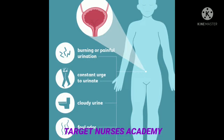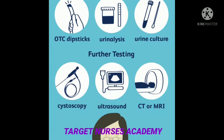Coming to the diagnosis, when you do a CBC you will see an increased WBC count. On urinalysis, you can see pus in the urine. Culture and sensitivity of the urine can give a clear picture about the organism causing the infection and its sensitivity to particular drugs.